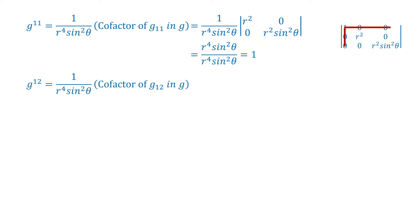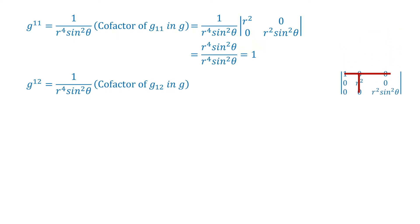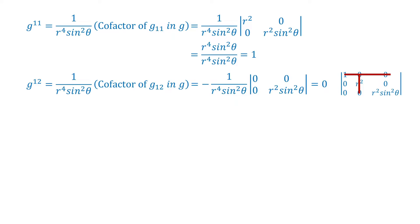g^12 equals 1 by r to the power 4 sin square theta, into the co-factor of g12 in g, which equals minus 1 by r to the power 4 sin square theta, into the determinant of: 0, 0; 0, r square sin square theta — which is equal to 0.